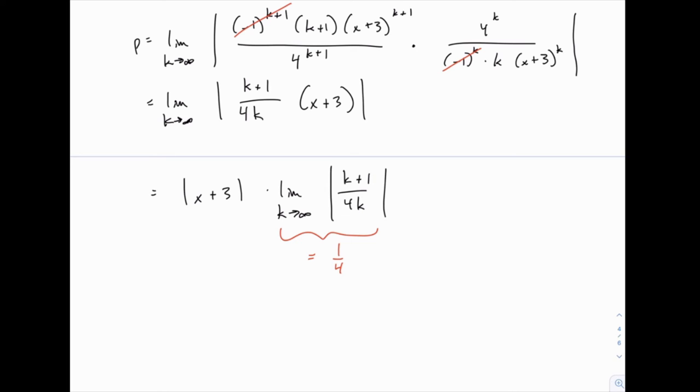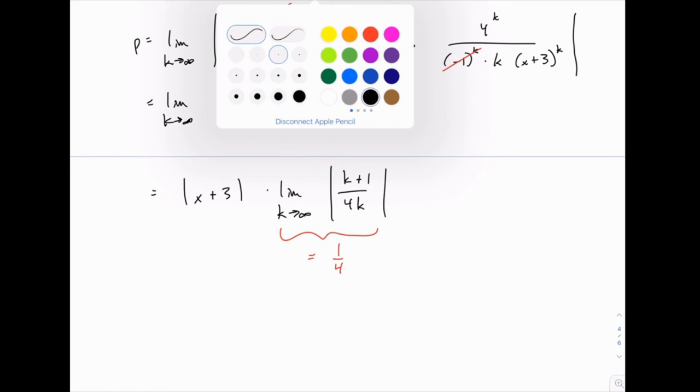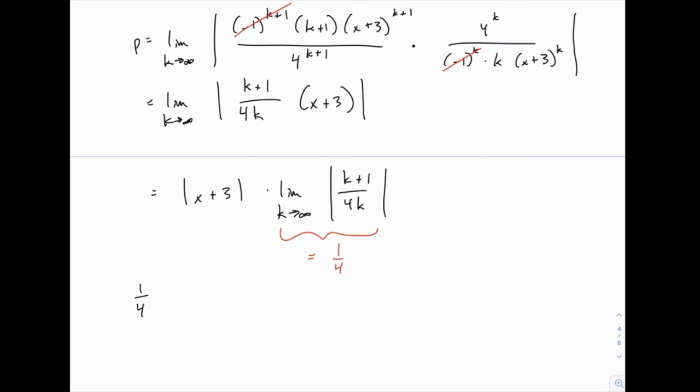So if you need to review that from calc 1 or pre-calc, doing these limits with rational expressions like this, feel free. But that comes out to 1 fourth. So what we wind up with is that 1 fourth times the absolute value of x plus 3 needs to be less than 1. And again, this comes from the ratio test. It needs to be less than 1 in order for it to converge. So that's our conclusion at the end of running the ratio test.